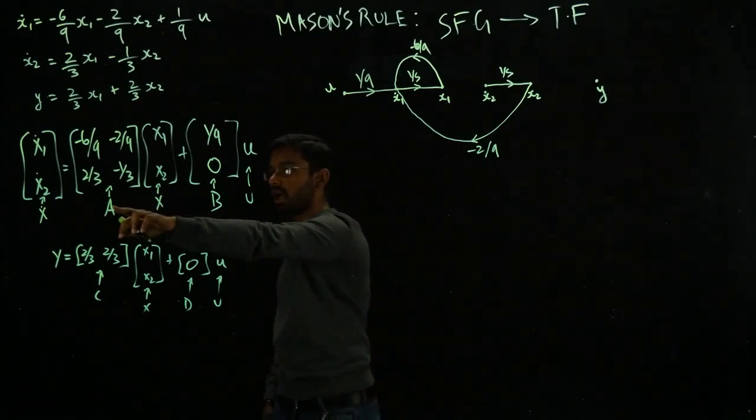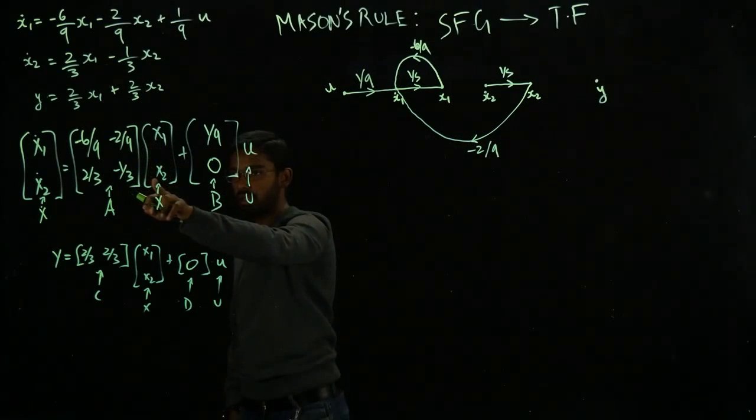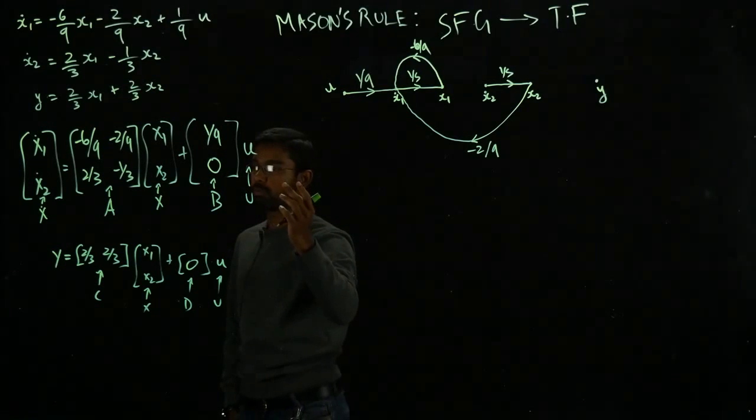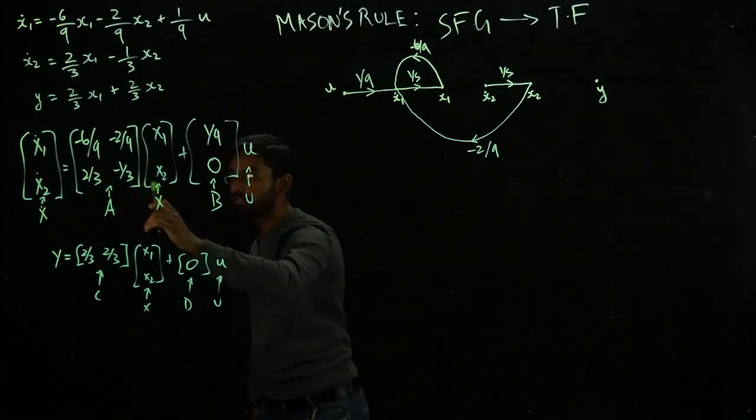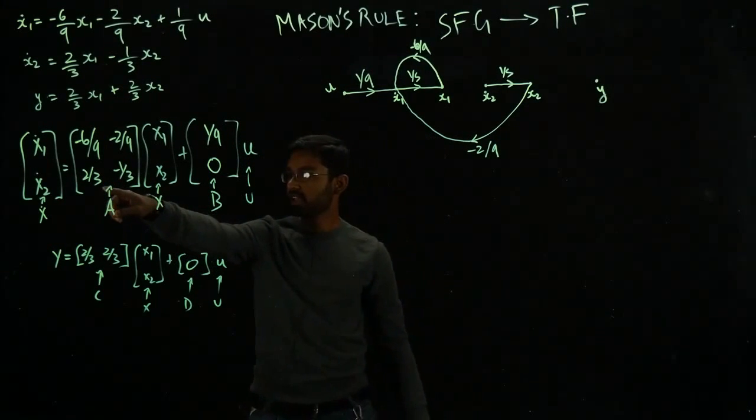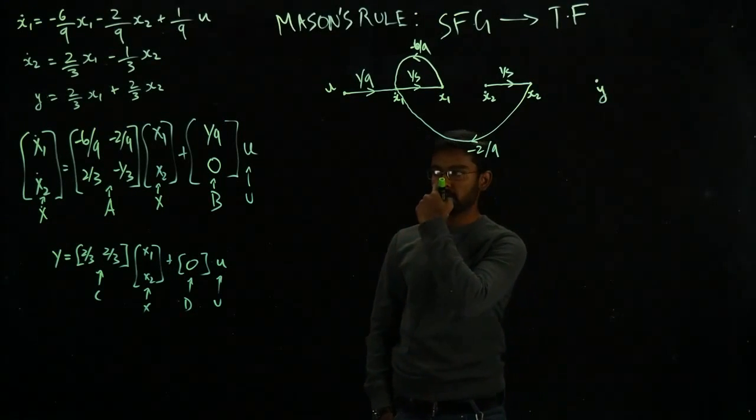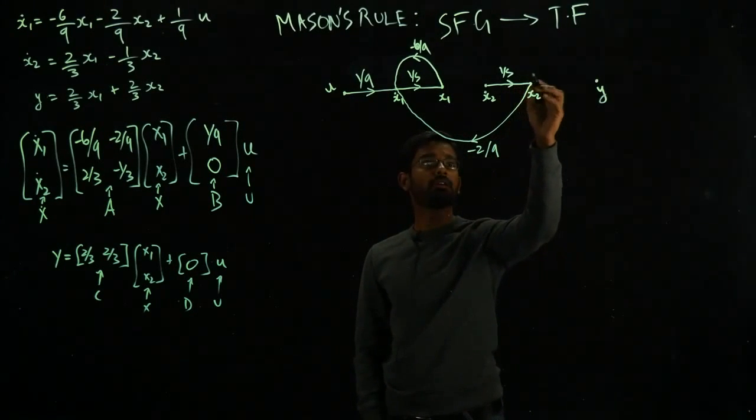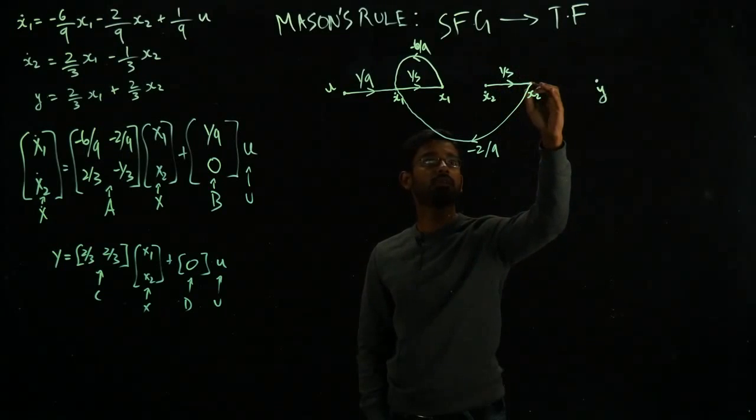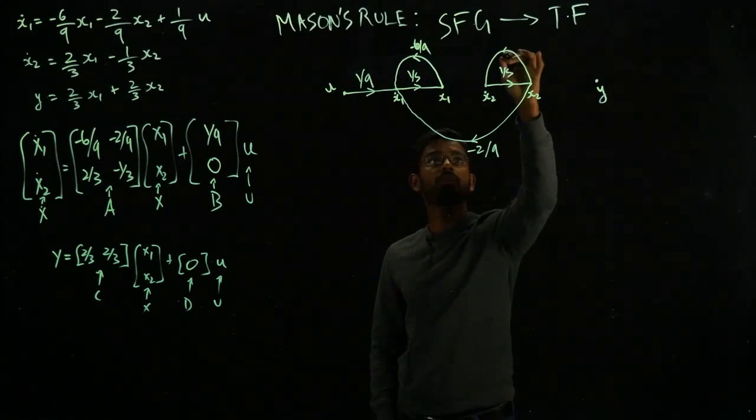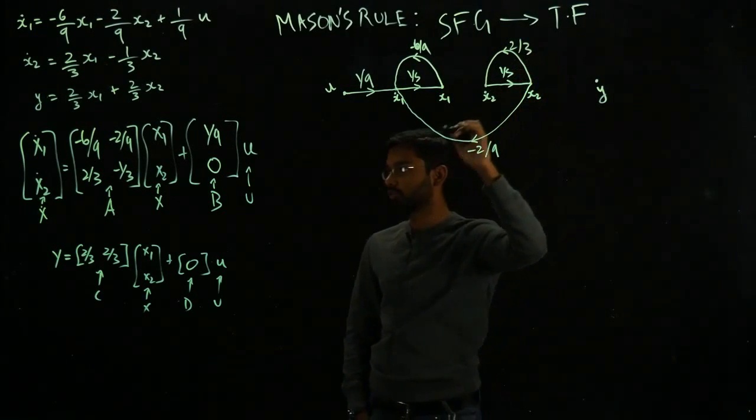What about x₂ dot? x₂ dot has x₁, x₂ but no contribution from u. So I have to take care of these two guys. In terms of x₁ I get 2 over 3. From x₂, minus 1 over 3.